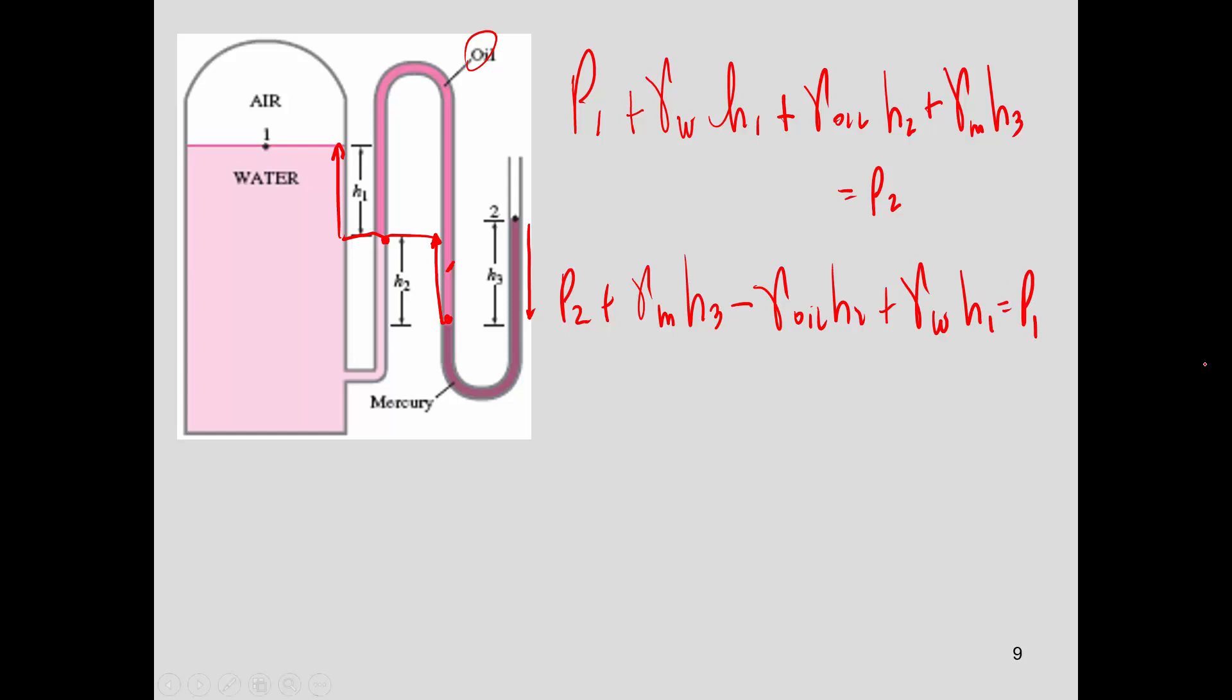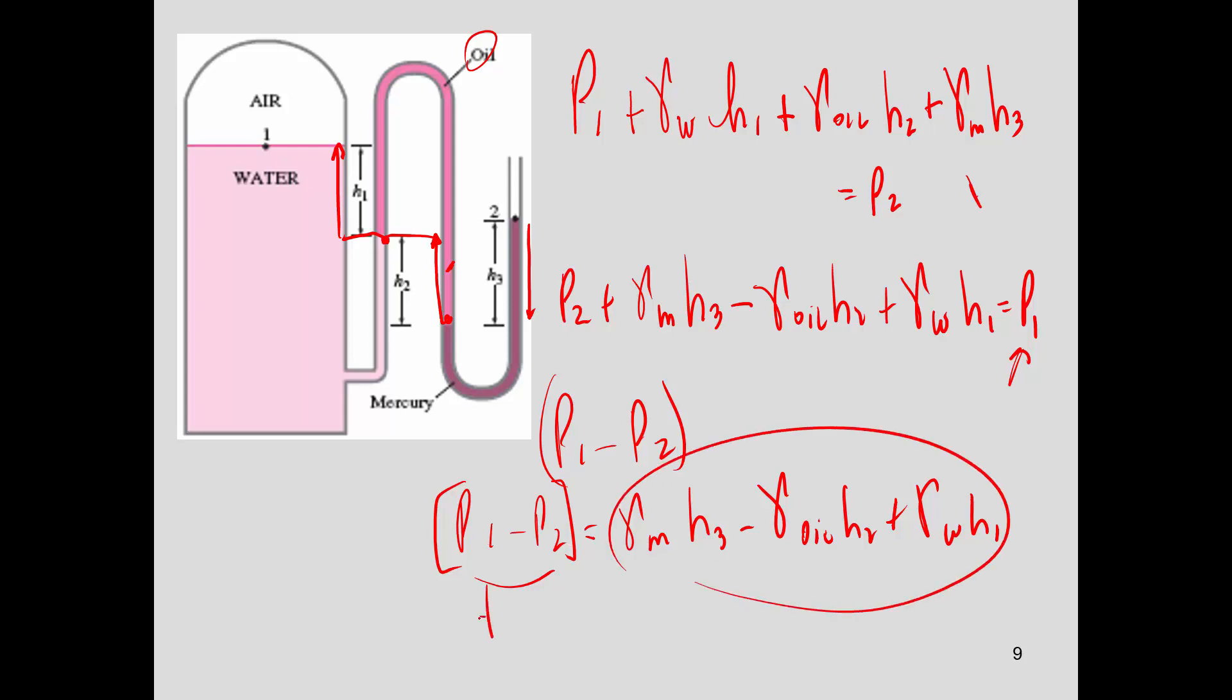So I can calculate P1 or P2. And then the other thing is that if they ask for P1 minus P2, then of course use either one of those definitions. For example, I'd say P1 minus P2 equals gamma mercury H3 minus gamma oil H2 plus gamma water H1. So sometimes you don't have to know specifically what's P1 and P2, but you know the difference. Now here I have P1 minus P2. So if I get this value here, and I get a positive value, then P1 is larger than P2. But if I get a negative value, then I know that P2 is larger than P1.